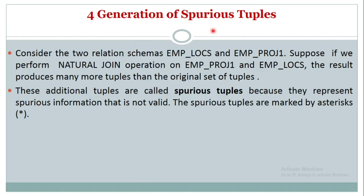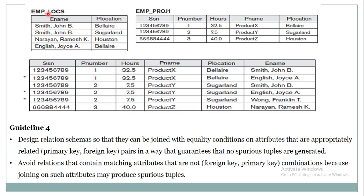The final guideline addresses the generation of spurious tuples. Consider two relation schemas: employee-location and employee-project. If we perform a natural join on these two relations using project location as the joining attribute, the result may produce more tuples than the original set — these additional tuples are called spurious tuples. Joining these two tables based on project location leads to an invalid resultant relation because many employees might work in the same location for different projects.